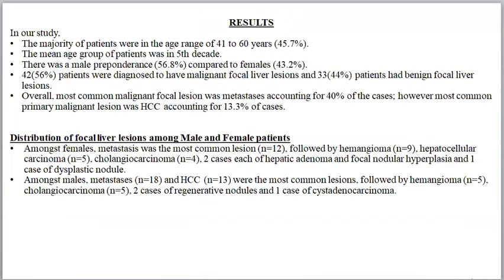In our study, the majority of patients were in the age range of 41 to 60 years, accounting for 45.7% of patients. The mean age group was the 5th decade. There was a male preponderance, with 56.8% males and 43.2% females. 42 patients were diagnosed with malignant focal liver lesions and 33 patients had benign focal liver lesions.